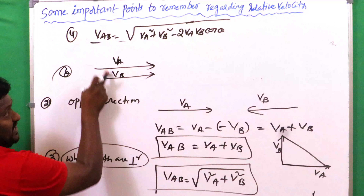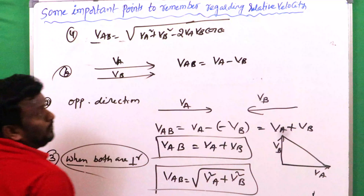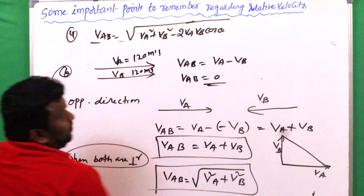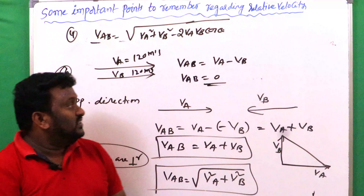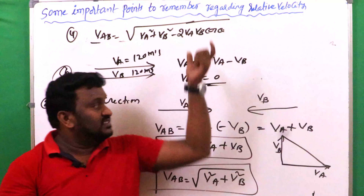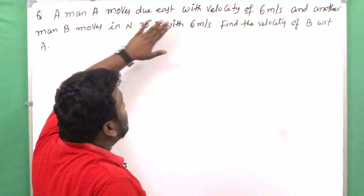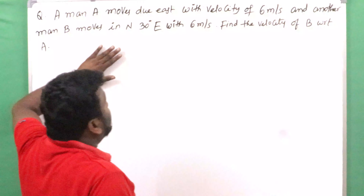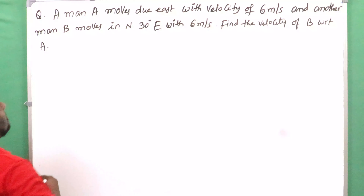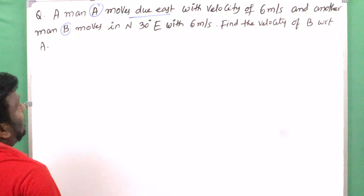Point five: when both vehicles are moving in the same direction and with equal speeds, then vAB = vA − vB = 0. For example, if both are moving at 120 m/s in the same direction, their relative velocity is zero. These are the important points to remember regarding relative velocity.